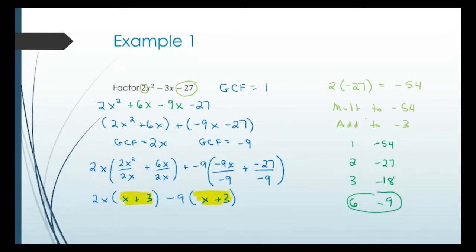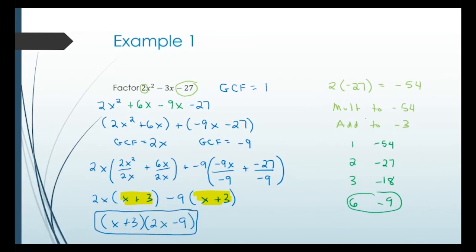Since both parentheses match, x plus 3 is the first factor. The second factor is what's in front — basically what's left over — which is 2x minus 9. So the final answer for factoring is x plus 3 times 2x minus 9.